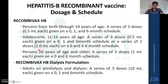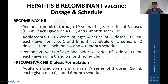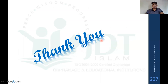For persons 20 years of age and older, a series of 3 doses with 1 ml each is given at 0, 1, and 6 month schedule. This recombinant vaccine is also formulated for dialysis patients. Adult pre-dialysis or dialysis patients can be administered a series of 3 doses, each containing 10 ml, given at 0, 1, and 6 month schedule.